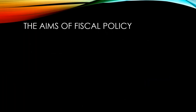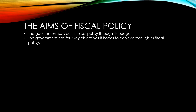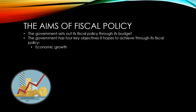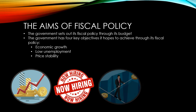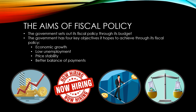The government sets out its fiscal policy — that is its plans for spending and taxation — through its budget. The government has four key objectives it hopes to achieve through its fiscal policy: economic growth, which is a sustained increase in output over time; low unemployment; price stability, meaning low levels of inflation; and a better balance of payments, meaning more exports and less imports.